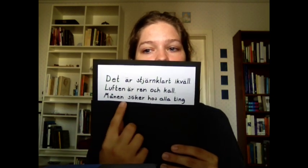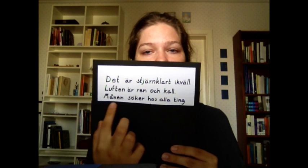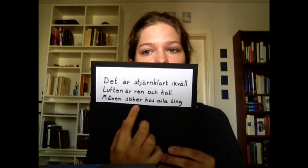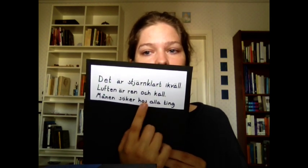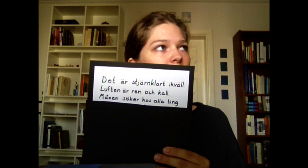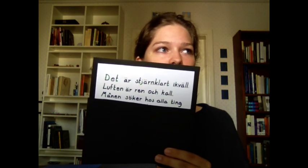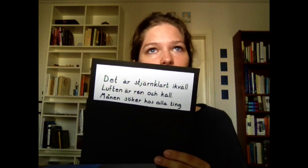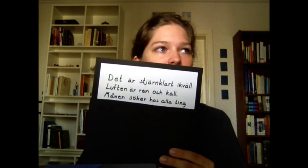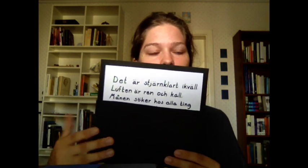And then we have måne, which means 'moon'. The -n at the end makes it definite singular, because it is a common noun as well. Månen söker — 'the moon searches'. And then hos — that is a word that doesn't exist in English, but it's like a preposition. Like if you live with your parents or in someone's house, then you live hos them. Or if you can see a trait in some species, you can see this hos that species. So it's like 'with' or 'in' in certain contexts.